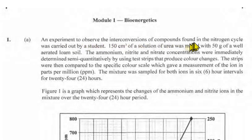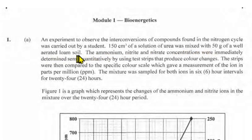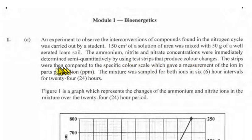150 cm³ of a solution of urea was mixed with 50 grams of a well-aerated loam soil. The ammonium, nitrite, and nitrate concentrations were immediately determined semi-quantitatively by using test strips that produce color changes. The strips were then compared to a specific color scale which gave a measurement of the ion in parts per million, also called ppm.